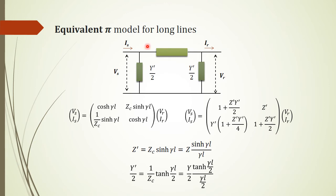We can derive an equivalent pi model for the long line by comparing the ABCD models of the long transmission line with the ABCD model of a medium transmission line. If we do that, we have the two parameters Z prime and Y prime as follows: Z prime equals Zc sinh gamma L, and Y prime over two equals one over Zc tanh gamma L over two.